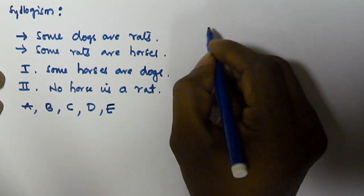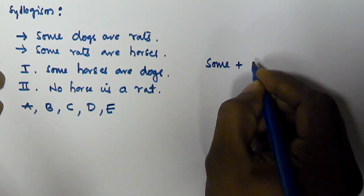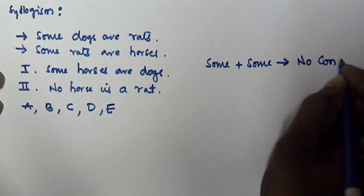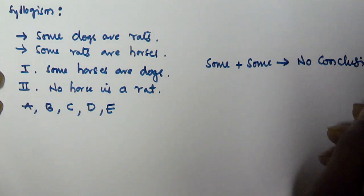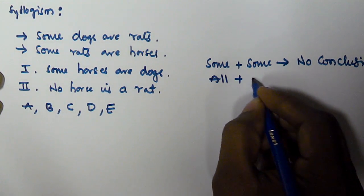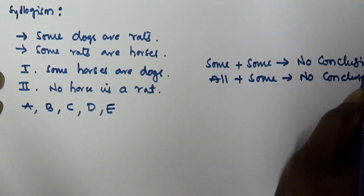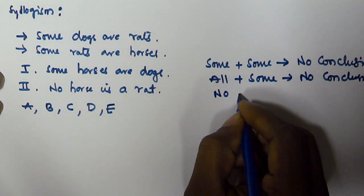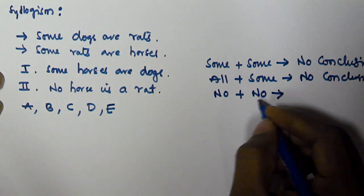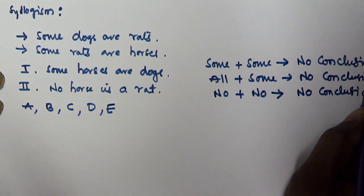In the previous video I told one rule: some plus some will give no conclusion. Similarly, all plus some will also give no conclusion. And if the first statement starts with 'no' and the second statement also starts with 'no', that is also going to give no conclusion.